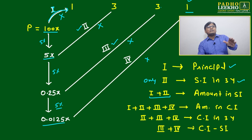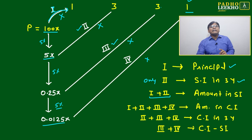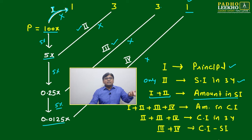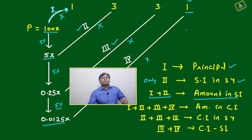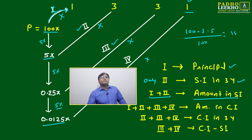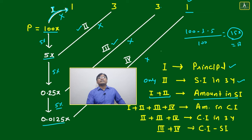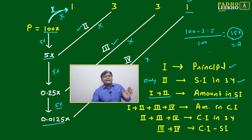Line 1 plus Line 2 means 100x plus 5x × 3, which is 100x plus 15x equals 115x. That is the amount under simple interest after 3 years. If you put 100x at 5%, the interest is 15x — that is Line 2, and adding Line 1 gives the SI amount of 115x.